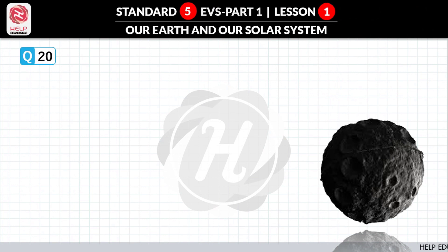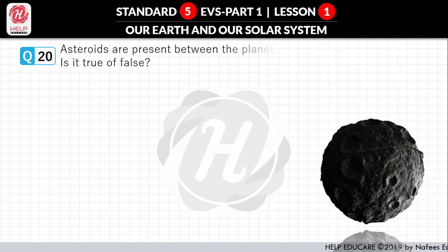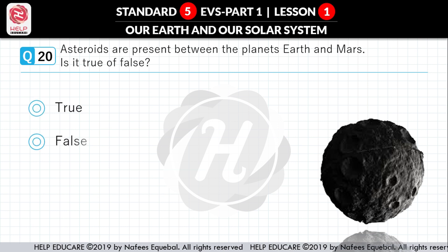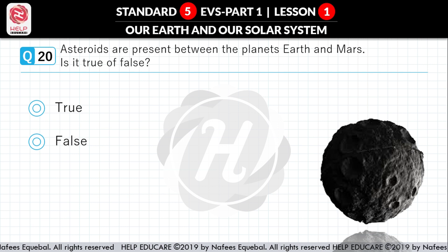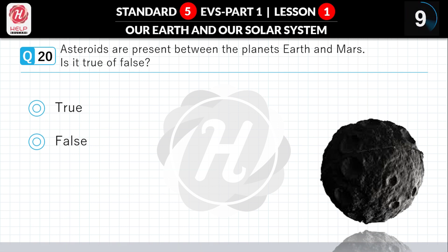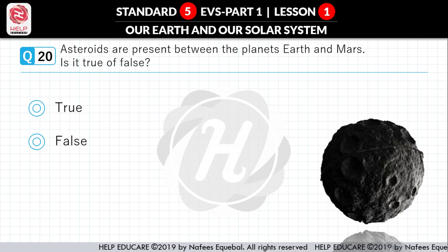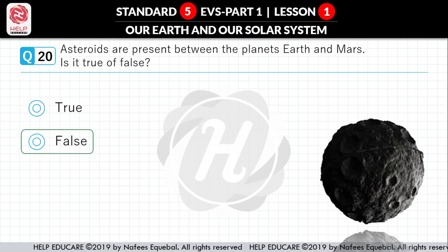Question No. 20: Asteroids are present between the planets Earth and Mars. Is it true or false? First option: True. Second option: False. Correct answer is False.